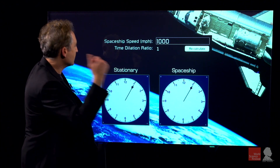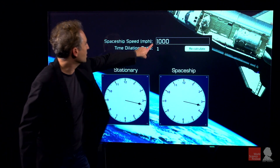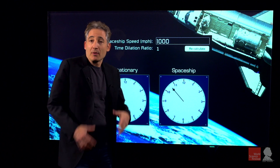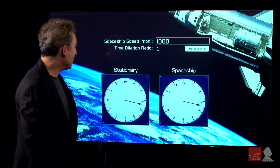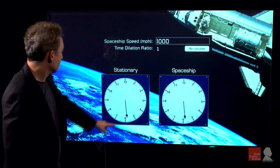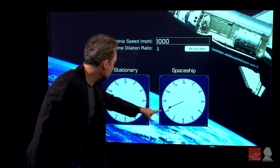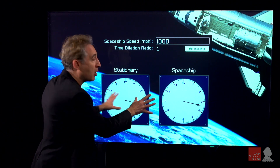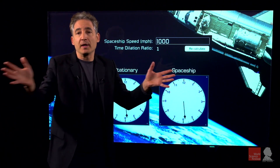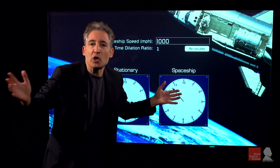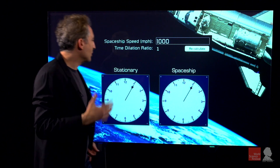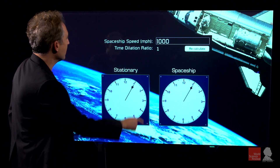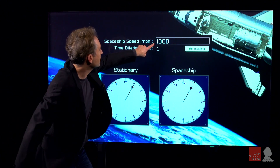But now let's give that spaceship some velocity — a thousand miles per hour, a reasonably quick speed. Notice that the slowdown, while there, is just too small for us to see it. That's why we don't know about the slowdown at everyday speeds that we can achieve.